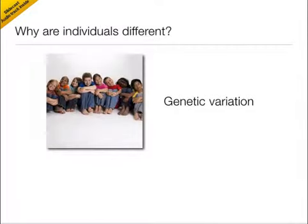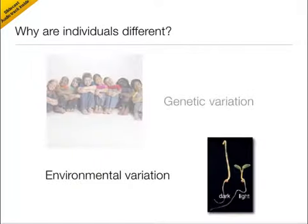Very broadly, we are interested in understanding why individuals are different from each other. One source of population heterogeneity is genetic variation, whereby genetic differences manifest themselves as differences in skin color, height, and so forth. Environmental differences provide another source of variability between individuals, where even genetically similar organisms — plants in this case — can display marked phenotypic variation depending on, say, the amount of light in which the plants were grown.